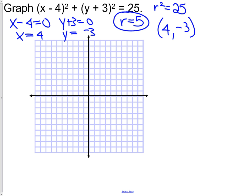I now know where my circle should be. It should be over 4 and down 3. We know our radius is 5, so we're going to go up 1, 2, 3, 4, 5, to the right 5, down 5, and to the left 5.